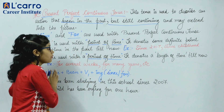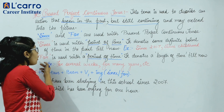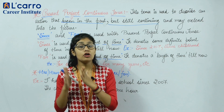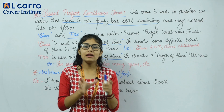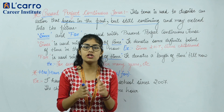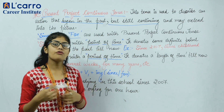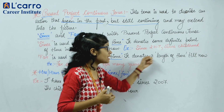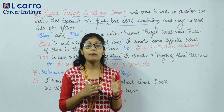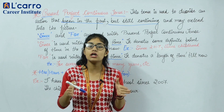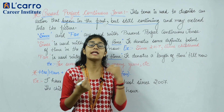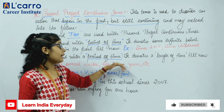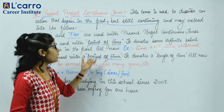For ka use point of time ke liye nahi, balki period of time ke liye hota hai. Period of time ka matlab hai jab aap exactly kisi aise duration ki baat karte hain jiske liye action chalta raha ho — jaise 'for a week', 'for a month'. It basically denotes a length of time till now. For example: 'for several weeks', 'for many years'. To aapka 'for' period of time ke liye use hota hai.